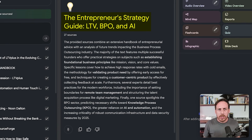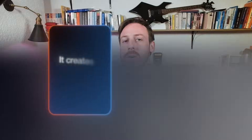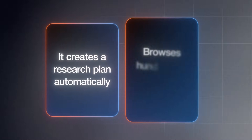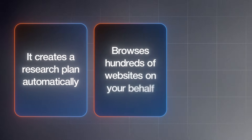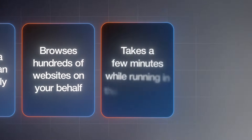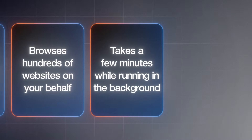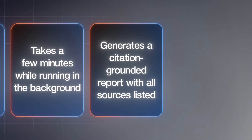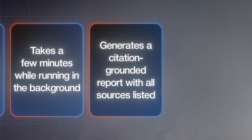The notebook is now titled 'The Entrepreneur Strategy Guide — LTV, BPO, and AI.' Here's how deep research works: it creates a research plan automatically, browses hundreds of websites on your behalf, runs in the background for a few minutes, and generates a citation-grounded report with all sources listed.